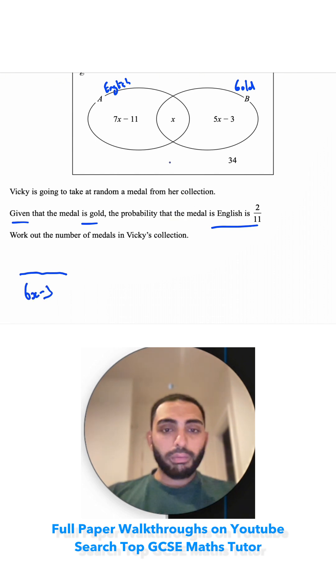For the numerator, because we're looking for the probability that the medal is English, we're going to choose this x here. Because this x is the English medals given that they are gold. So I'm going to put x as my numerator, and that will be equal to 2 over 11.